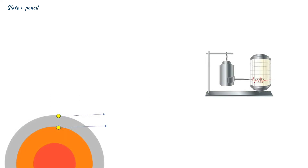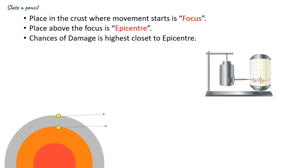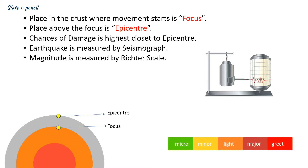The place in the crust where the movement starts is known as the focus, and the place above the focus is the epicenter. If you are nearest to the epicenter, you will receive more damage — the chances of damage are highest closest to the epicenter. Earthquakes are measured by a seismograph, and the magnitude of the earthquake is measured by the Richter scale. The diagram of the Richter scale shows the magnitude or intensity of the earthquake, and it is also color coded.